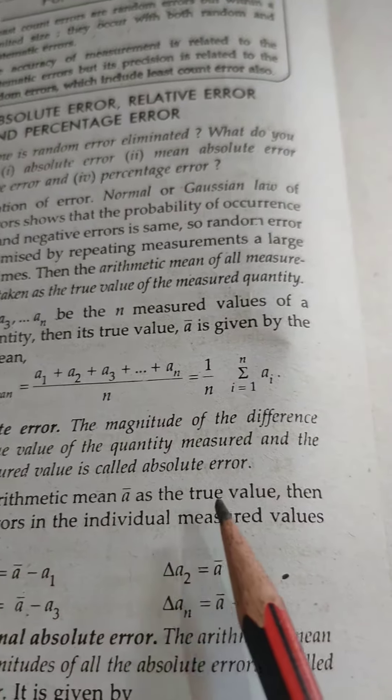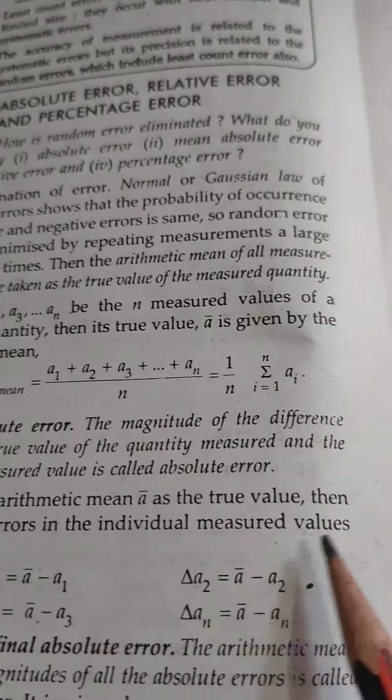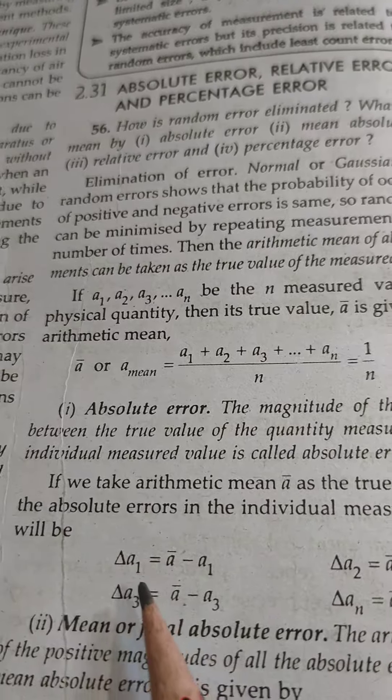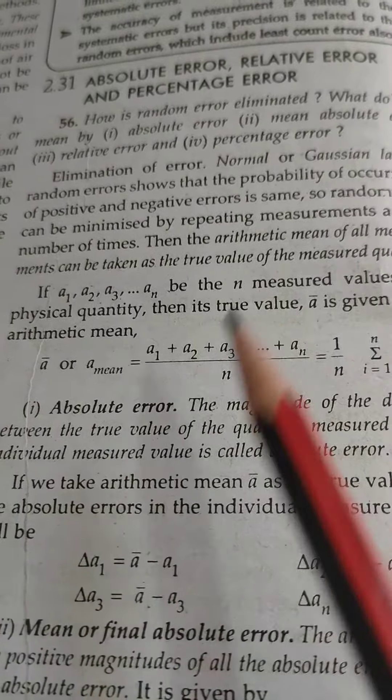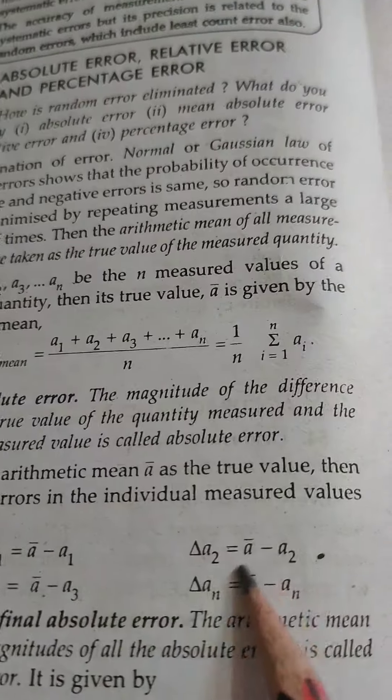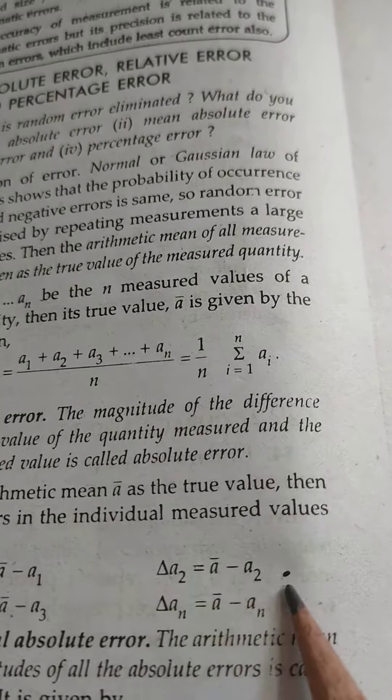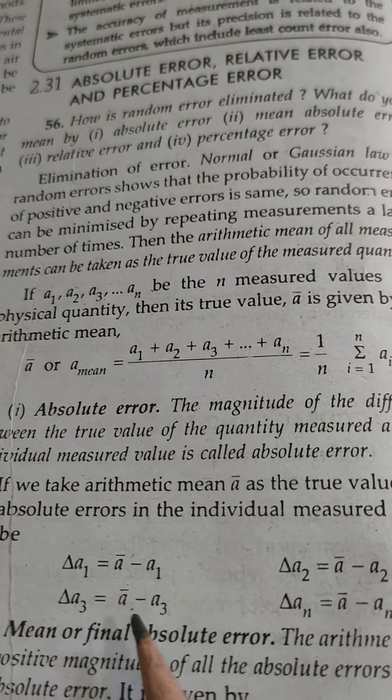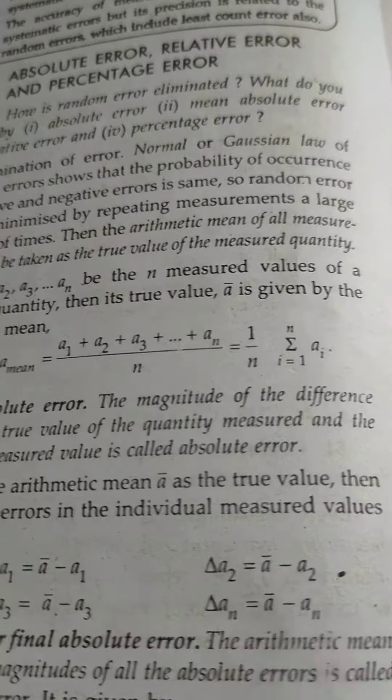If we have taken arithmetic mean as the true value, then the absolute error in the individually measured values will be: delta a1 equals ā minus a1, delta a2 equals ā minus a2, delta a3 equals ā minus a3, and delta an equals ā minus an.